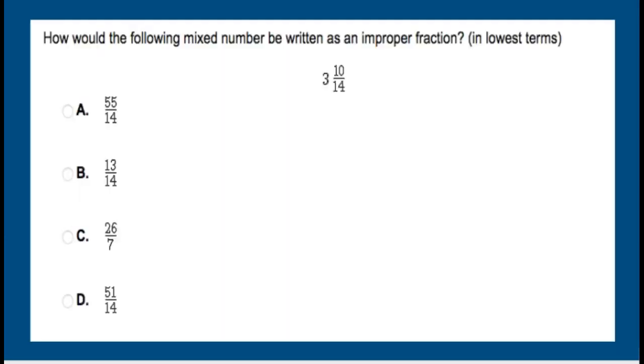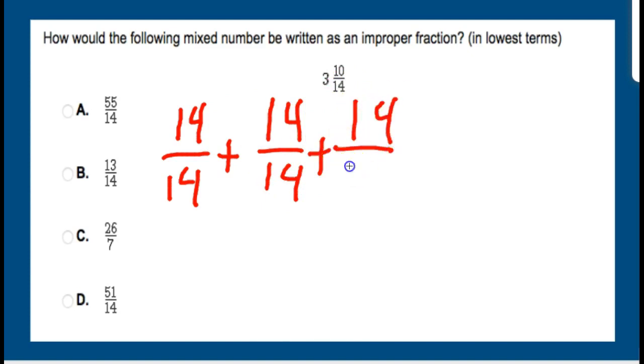How would the following mixed number be written as an improper fraction? Well, if you watch the video prior to this on my YouTube channel, we did a review on improper fractions from mixed numbers to improper fractions. And so you'll know that this right here is just saying that we have three groups of whole, 14 over 14, and I'm just taking that denominator. We have three of them. How do I know we have three whole? Because that whole number right there is three.